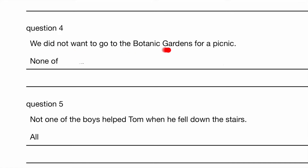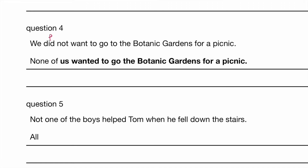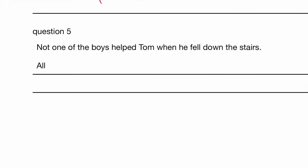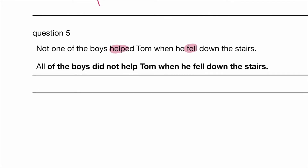We did not want to go to the botanic gardens for a picnic. 'Did' is in the past tense, so we know we have to use the past tense. Instead of 'we,' we say: none of us wanted to go to the botanic gardens for a picnic. Not one of the boys helped — how many boys helped? Zero. Not one of the boys helped at all — that's the same as saying all of the boys did not help. Notice 'did not help' because this is past tense. So: all of the boys did not help Tom when he fell down the stairs. Make sure you use the past tense.